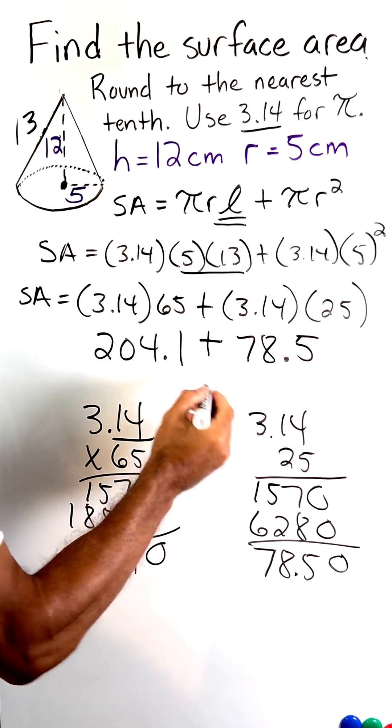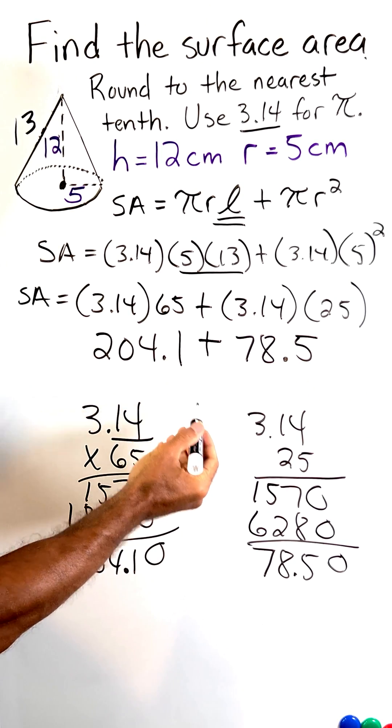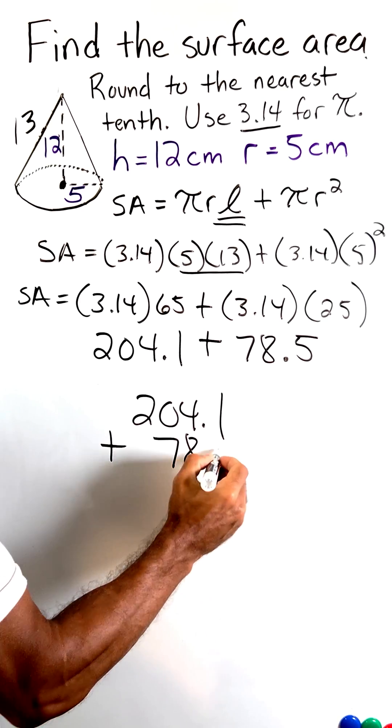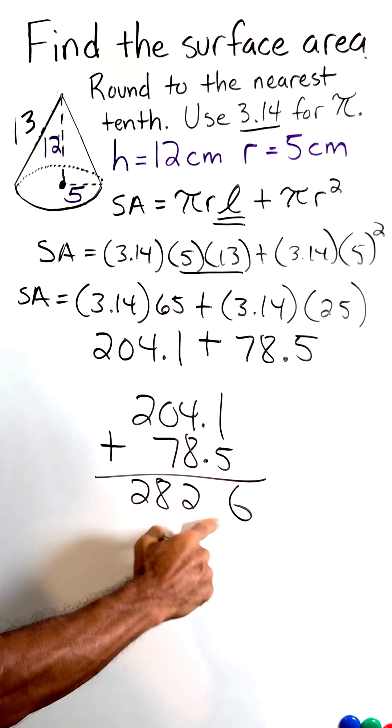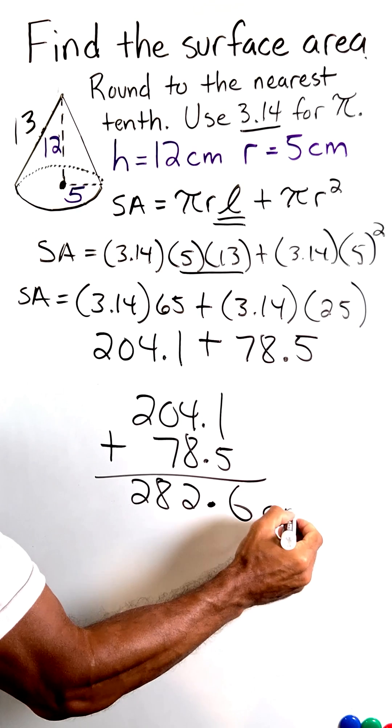All right, now we have to add these two numbers together, and that's going to give us our total surface area. So we come up with 282.6 square centimeters, which is the total surface area of this cone.